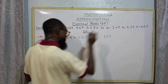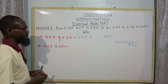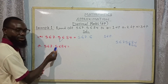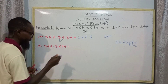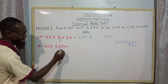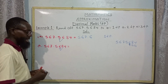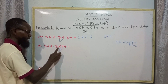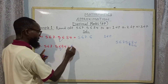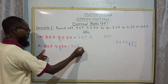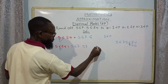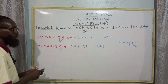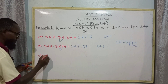Now consider two decimal places. The first decimal place is five, and the second decimal place is six. When you look at the digit to the right, we have eight. Eight is a number between five to nine — round up to one, add it to this six making seven. So we have 567.57 to two decimal places.